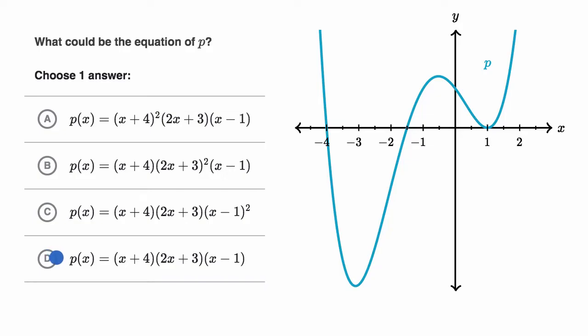All right, now let's work through this together. We can see that all of the choices are expressed as a polynomial in factored form. Factored form is useful when we're thinking about the roots of a polynomial, the x values that make that polynomial equal to zero.